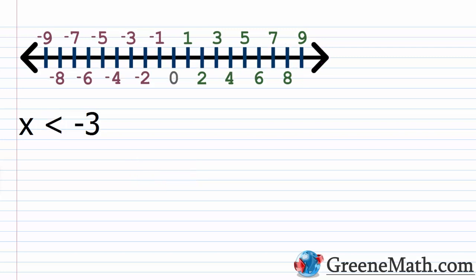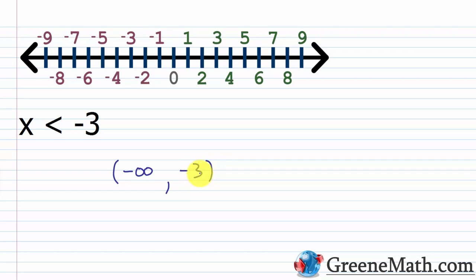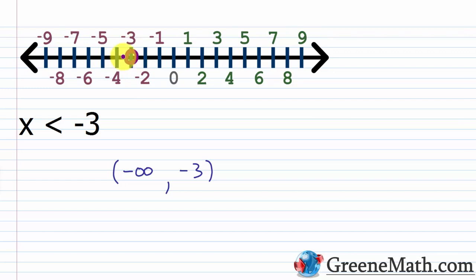For x is less than negative 3: the largest value is negative 3, which is not included (strict inequality), and x goes down to negative infinity. So in interval notation we write (−∞, −3). Graphically, place a parenthesis facing left at negative 3 and shade everything to the left. You can also use an open circle at negative 3 with shading to the left — both mean negative 3 is not included.